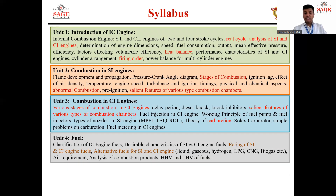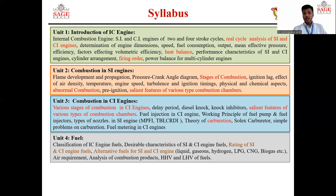In the fourth unit, we will study about fuels: what are the various types of fuel, what are the desirable characteristics of fuel, and the rating of fuel — how we rate petrol or diesel, that is SI engine fuel and CI engine fuel. We will also know about the various alternative fuels available as alternatives to petrol or diesel. And finally, we will study the analysis of combustion products.